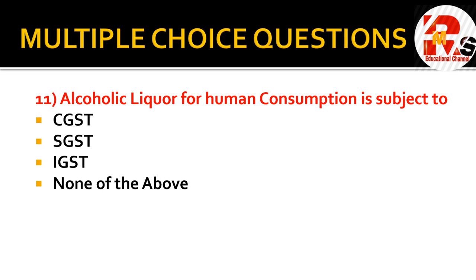Question eleven: alcoholic liquor for human consumption is subject to CGST, SGST, IGST, or none of the above? Remember — alcoholic liquor for human consumption is not under the purview of GST. If it were included, the highest GST rate is 28%, making liquor even cheaper and creating societal problems. So the right answer is none of the above.